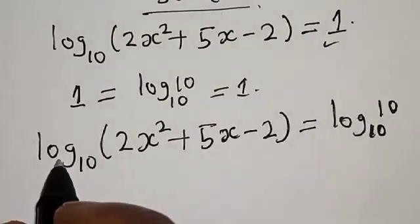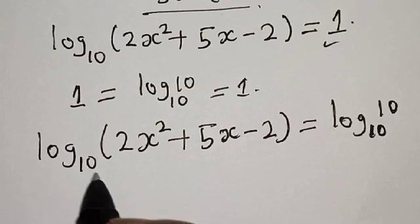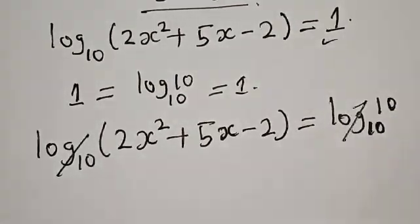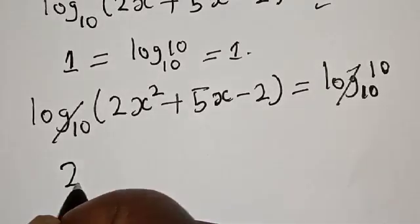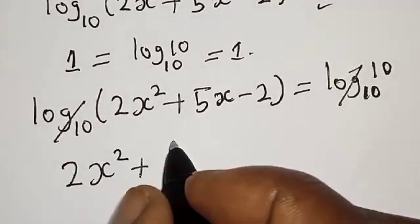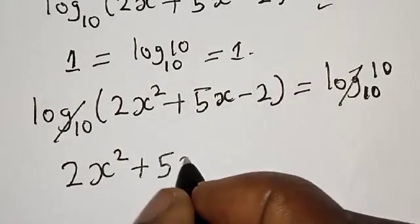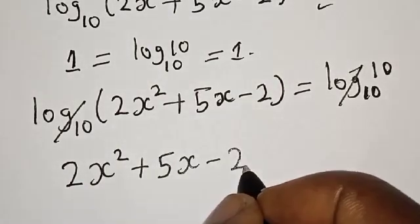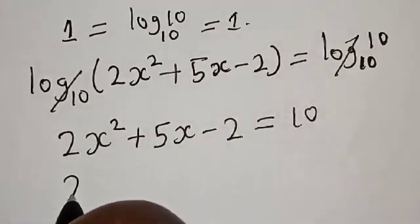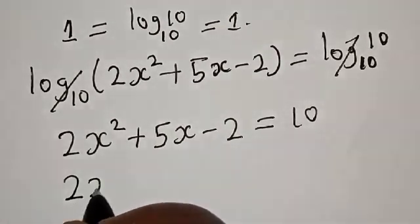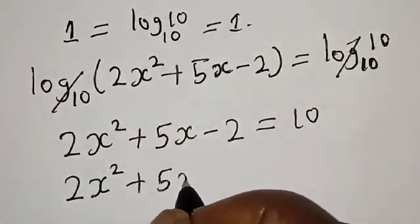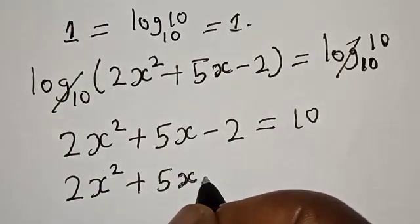Then, here we have log base 10, and this one will cancel this. We have 2x² + 5x - 2 equals 10.